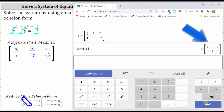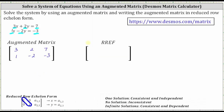The second row is zero, one, two. To find the solution, we write the equations represented by each row. The first row represents the equation one X equals one, or just X equals one.